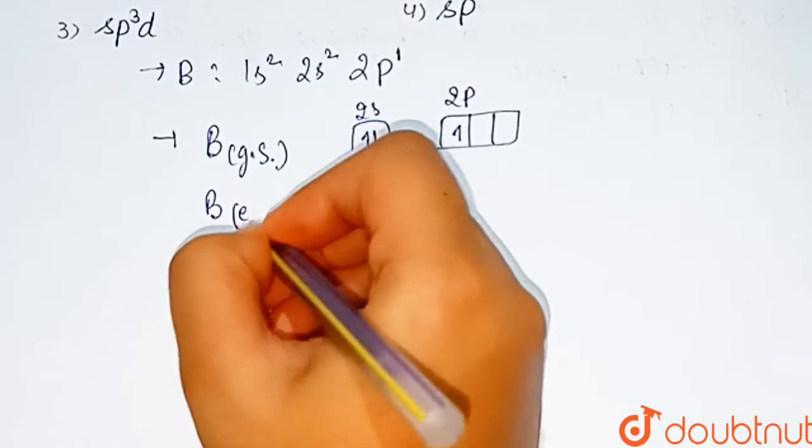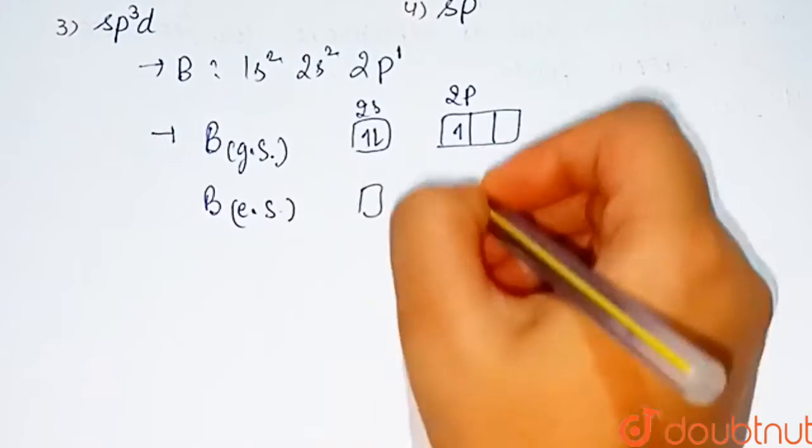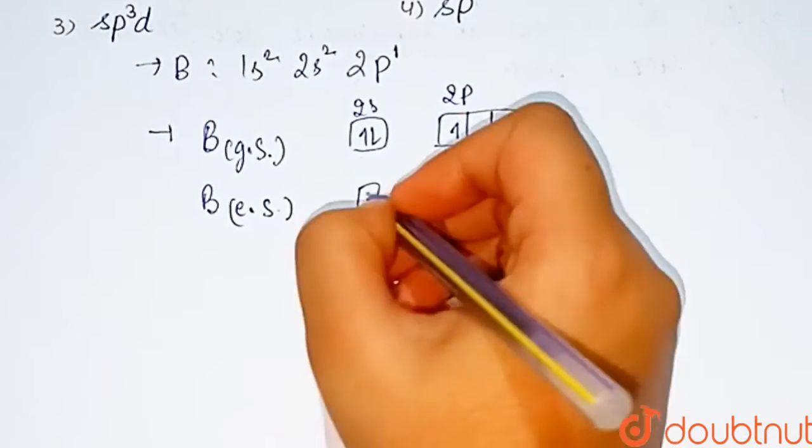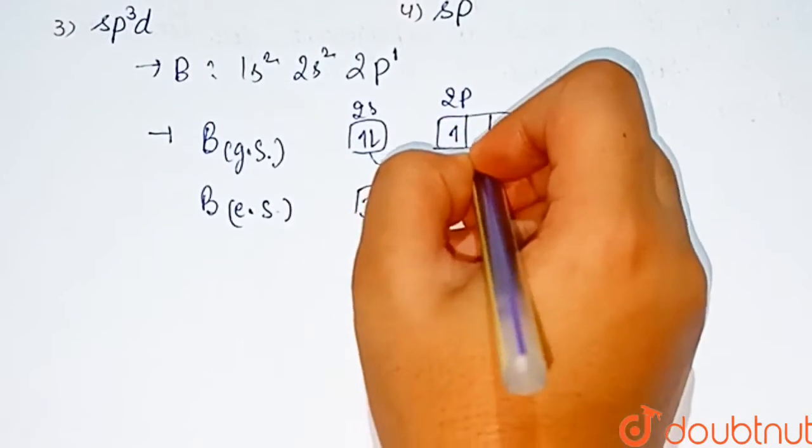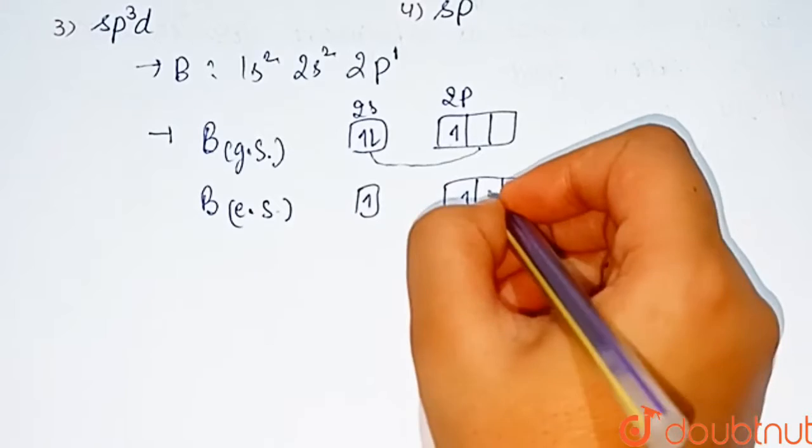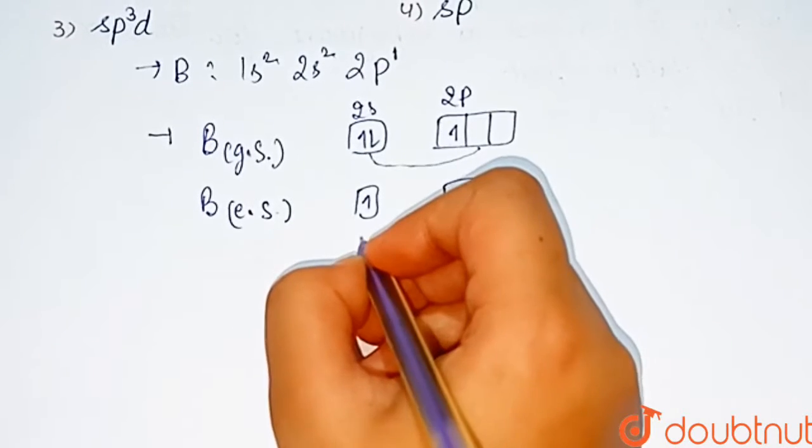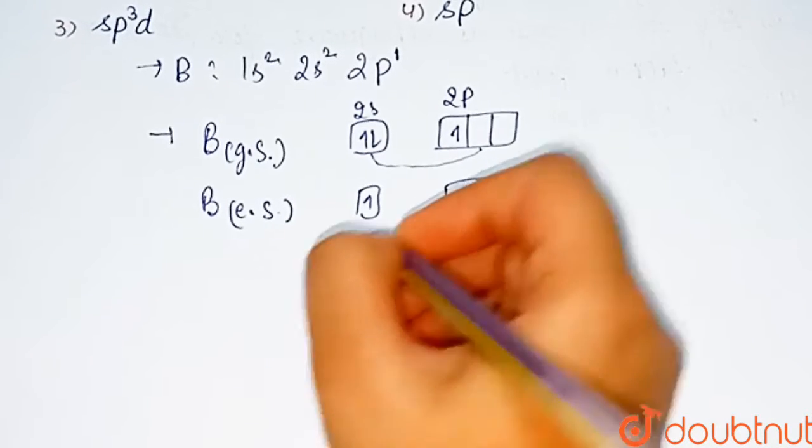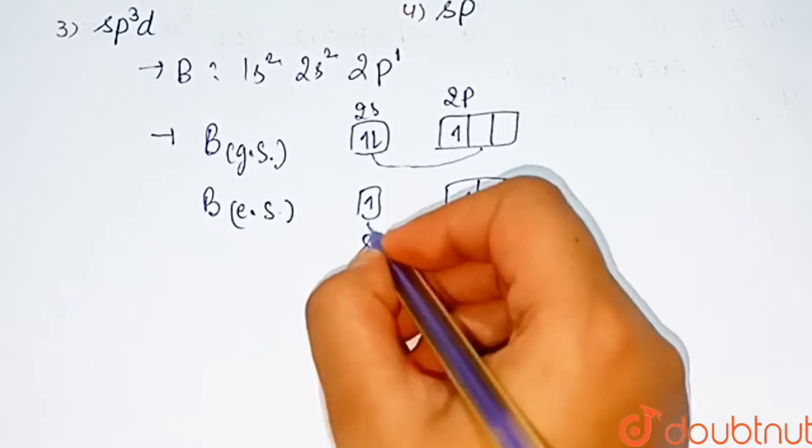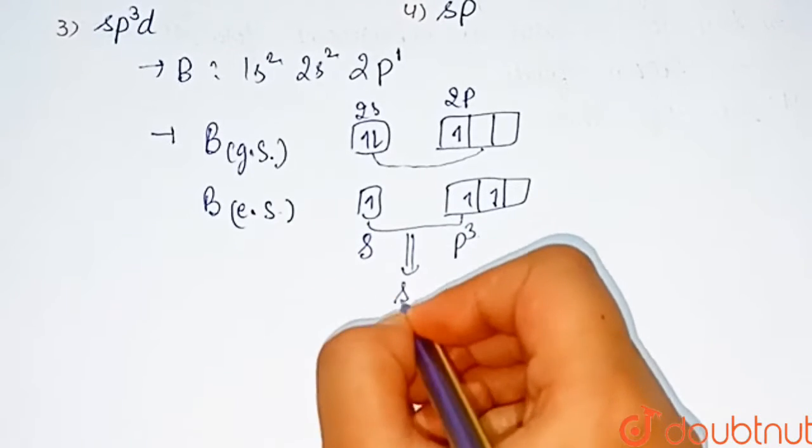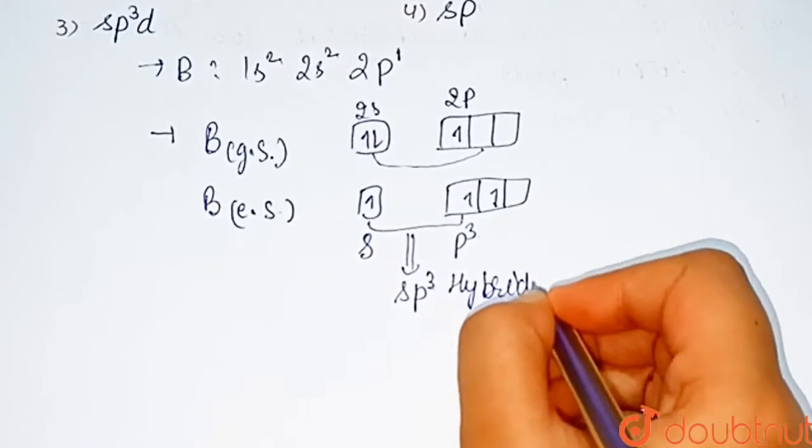Boron in the excited state: one electron from 2s excites to the 2p orbital, giving us 1, 2, and 3 unpaired electrons - one s orbital and three p orbitals. So its hybridization is sp³ hybridization.